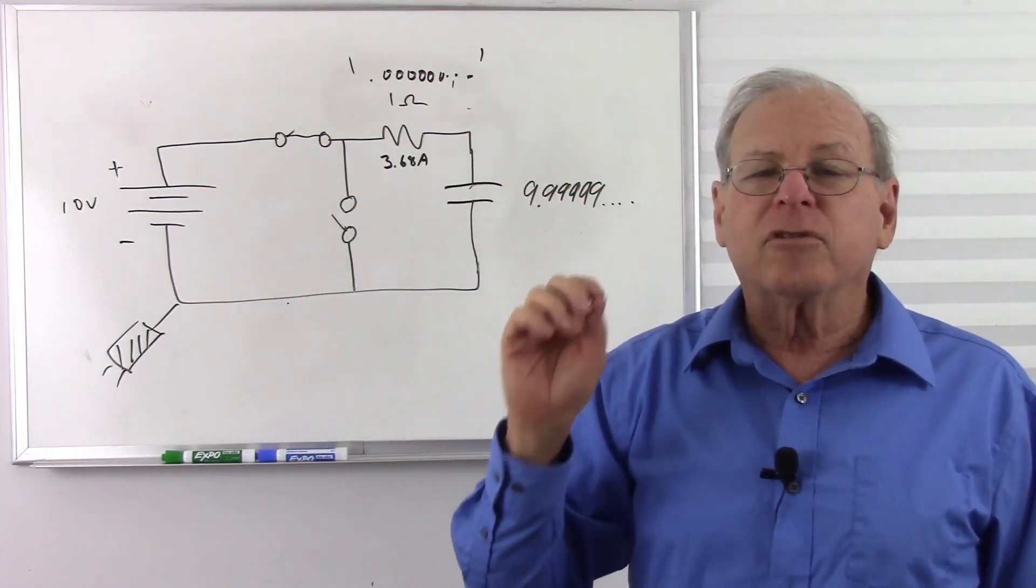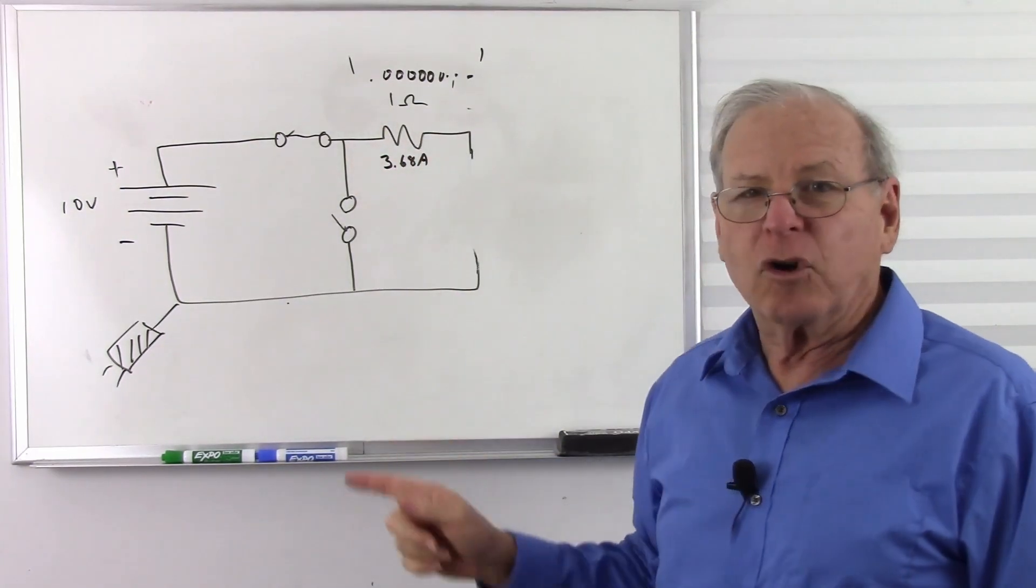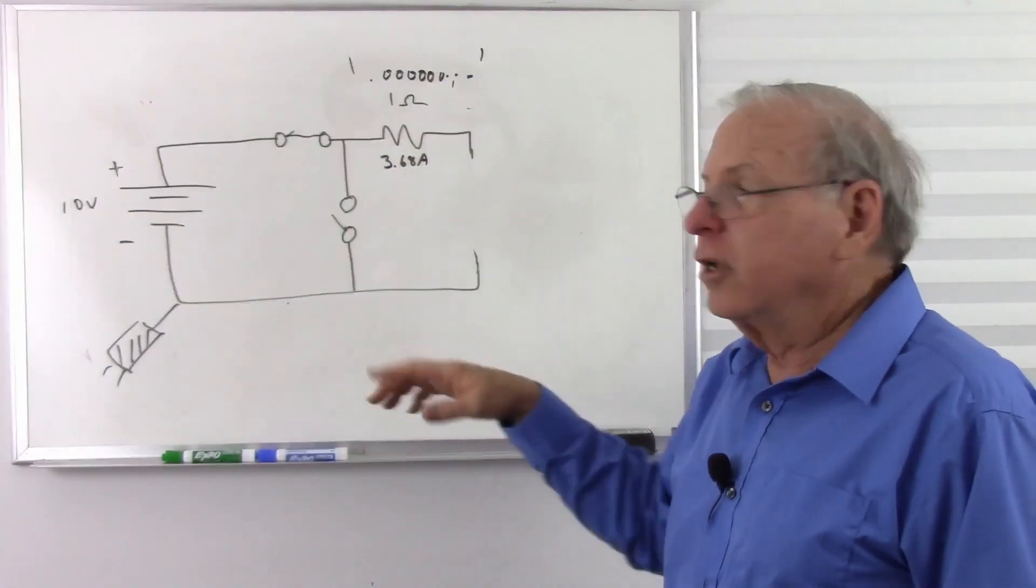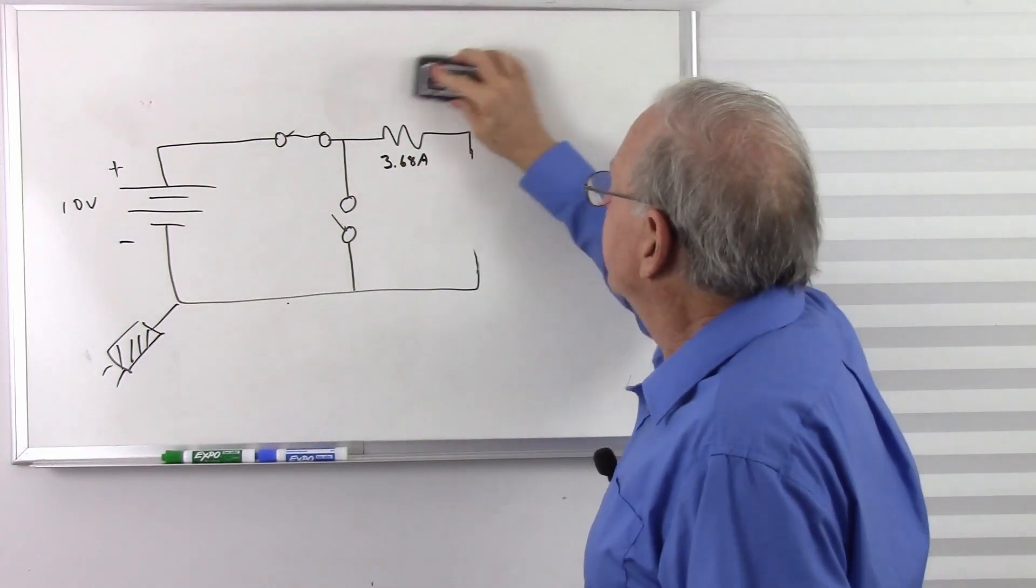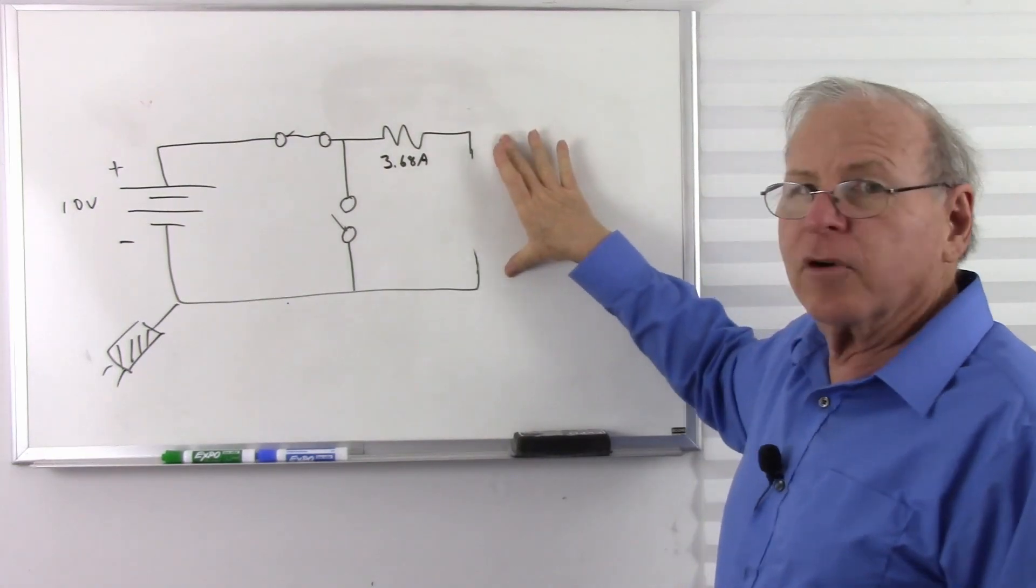So if I eliminate the capacitor, I have an open circuit, no current, no voltage. So now whatever voltage I have here, I have no loss. I have that same voltage over here.